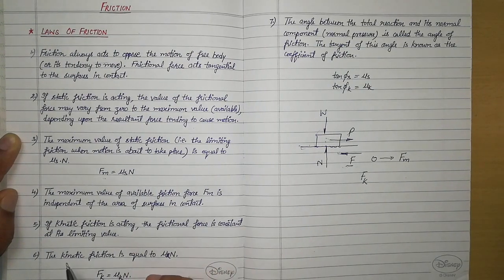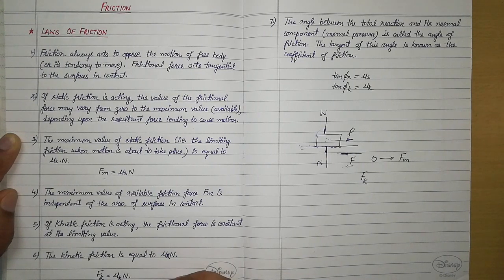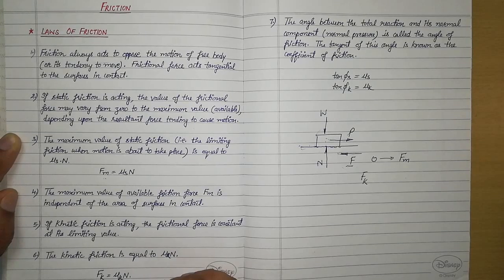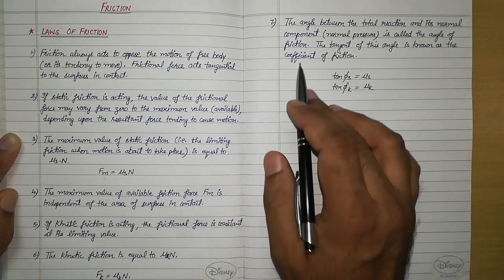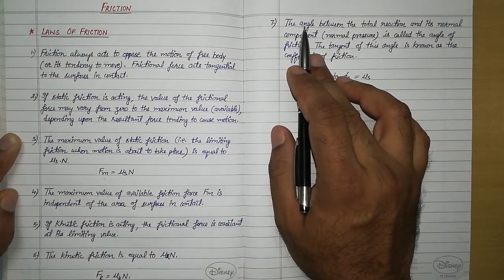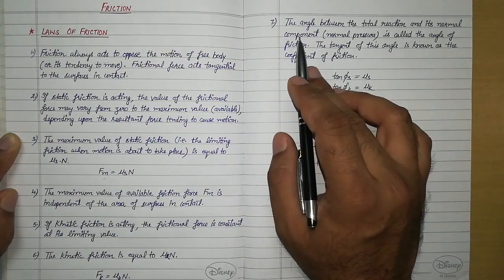The formula for kinetic friction is: fk = μk·N, where μk is the coefficient of kinetic friction and N is the normal pressure.